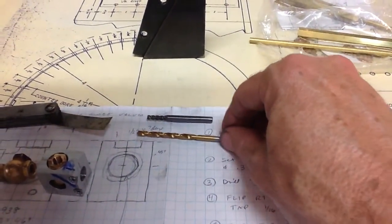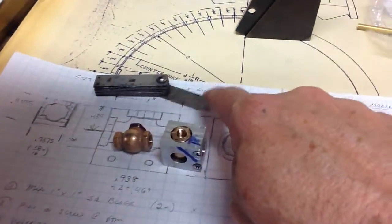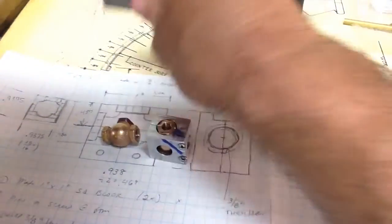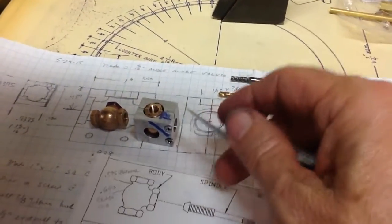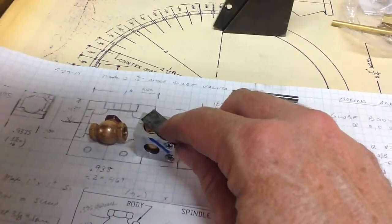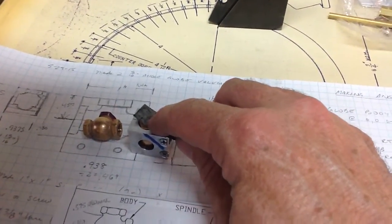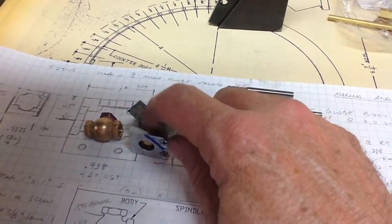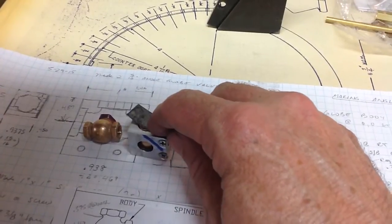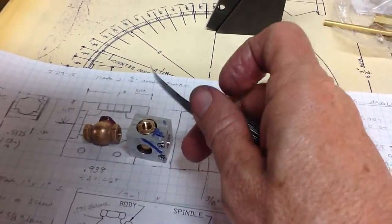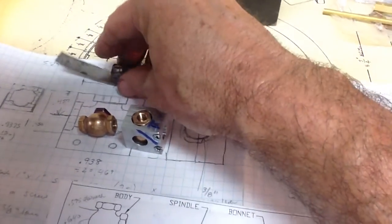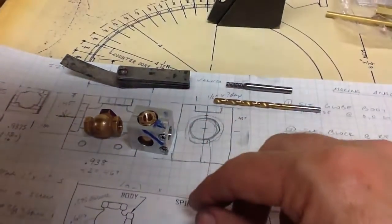The second thing I wanted to point out, second little machining tip, is a lot of these call for exact depths. So I use a feeler gauge, put the feeler gauge on top of the hole, put the drill bit down, mark my DRO at zero. This is a three thousandths of an inch feeler gauge, so I just add an extra three thousandths when I go ahead and drill it down so I get the right depth.